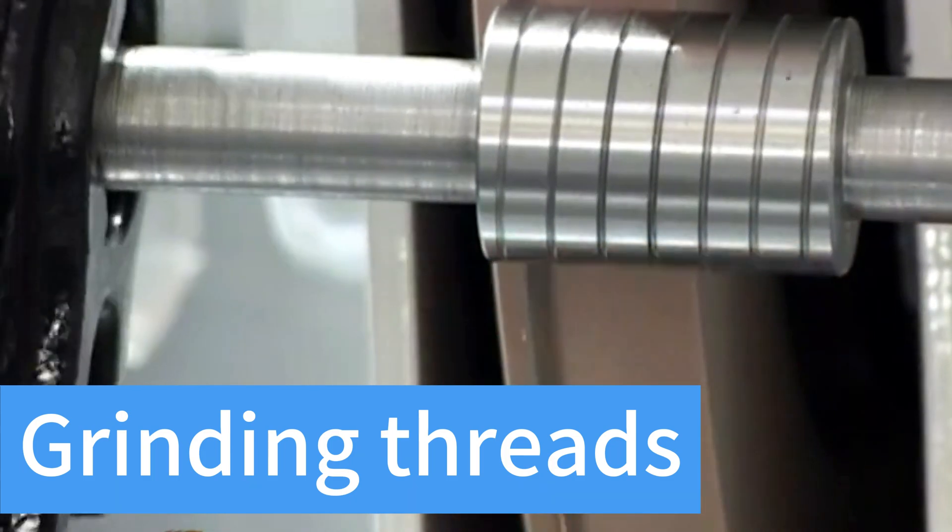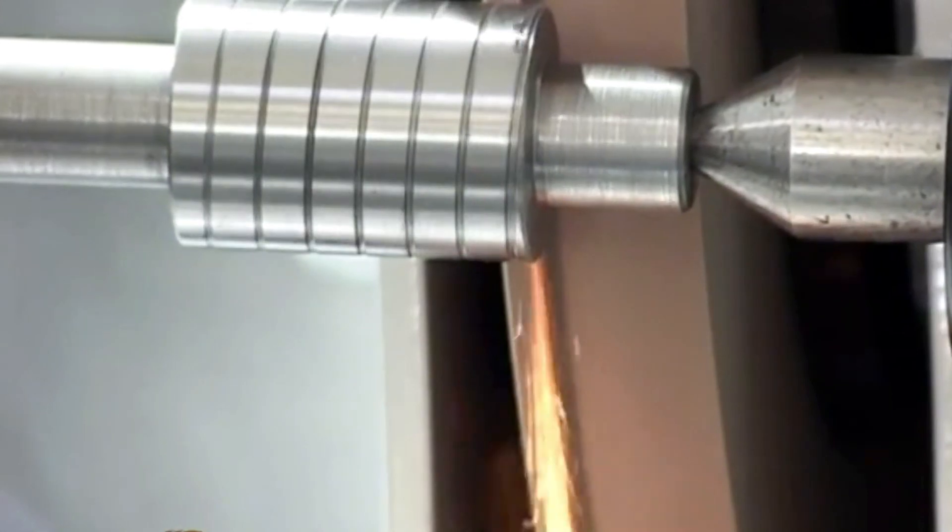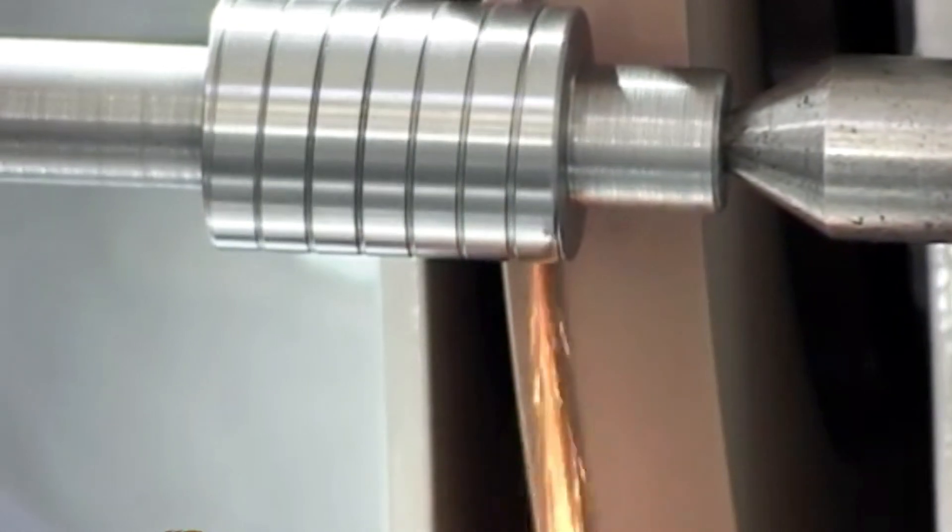Grinding threads. Thread grinding uses a molded grinding wheel as a grinding tool to produce precision threads.